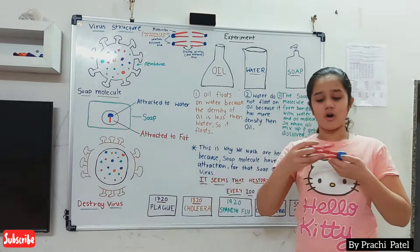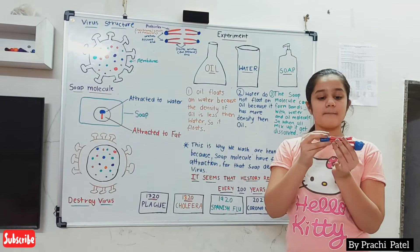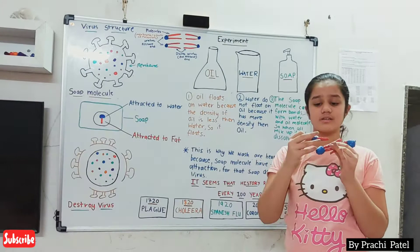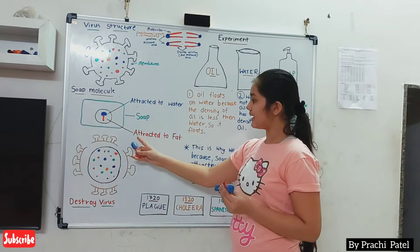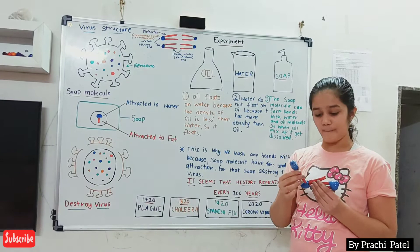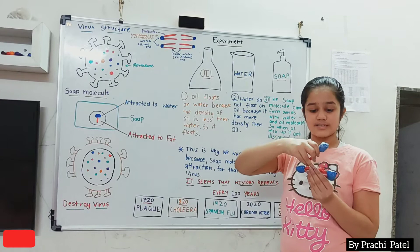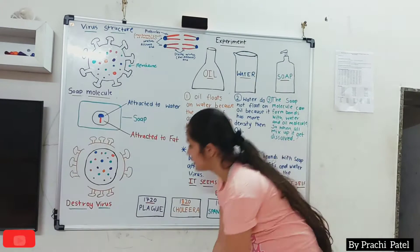A number of molecules together make a membrane, and soap molecules have the same properties. One part of the soap molecule attracts to water and another part attracts to fat. So when we wash our hands with soap, we disturb the virus structure and it gets destroyed, as you can see right over here.